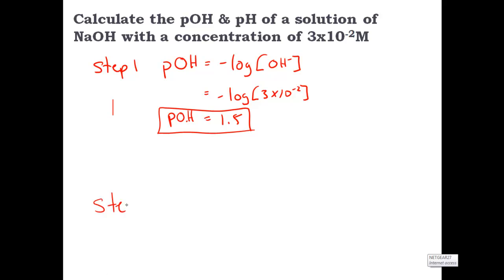In step two, we have the pH is going to be equal to 14 minus the pOH. So we have the pH is equal to 14 minus 1.5. And therefore, the pH is going to be equal to 12.5.